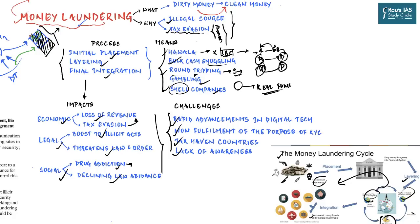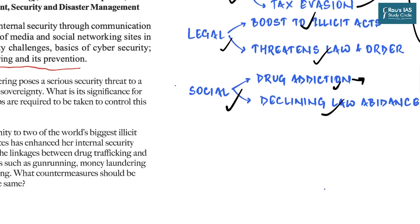Money laundering and the proceeds thereof have a direct impact on India's internal security, as illicitly obtained wealth more often than not becomes the base for terrorist financing and organized crime networks. In 2013, UPSC asked: 'Money laundering poses a serious security threat to a country's economic sovereignty — what is its significance for India and what steps are required to control it?' In 2018, UPSC asked about the linkages between drug trafficking and illicit activities such as gun running, money laundering, and human trafficking.